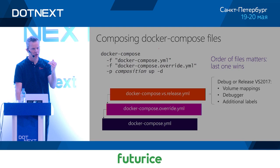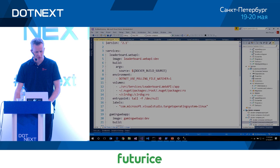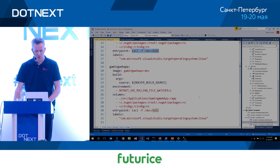Inside 'docker-compose.vs.debug.yml' you can see environment variables, volume mappings, and a different entry point that just keeps the container running so the debugger can attach. Only the two application services are there — SQL Server isn't included because it just needs to run as-is. You can run the full composition from the command line with 'docker-compose -f docker-compose.yml -f docker-compose.override.yml up'.